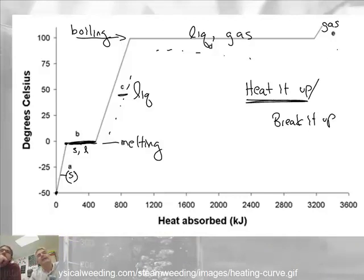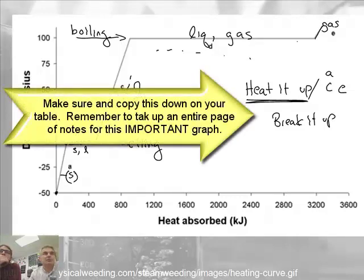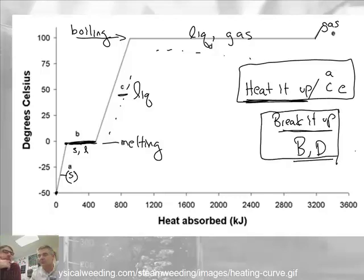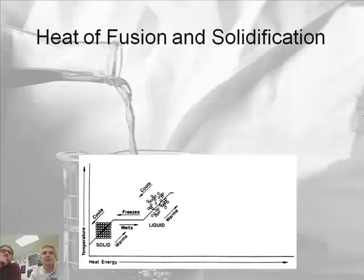What sections would be heated up sections? A, B, C, D, E? The heated up sections are A, C, and E. In A, we're heating up the solid. C, we're heating up the liquid. And E, we're heating up the gas. So you can see the temperature's rising. In the heat it up sections, the temperature is going up. In the break it up sections, what sections would that be? B and D. That's the melting and the boiling phases. So the energy is being used, but it's not being used to warm the temperature up. It's being used to break the bonds.